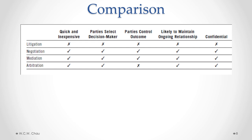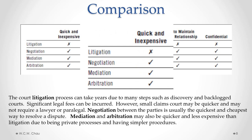Let's compare the four different methods of dispute resolution. The first criteria is quick and inexpensive. The court litigation process can take many years due to the many steps involved in a lawsuit, such as discovery. Also, the public court system is quite often backlogged — it may take quite a bit of time to get a court date for a trial. And during that long process, significant legal fees can be incurred. Because the process is fairly technical, it is highly recommended that legal counsel be retained for court litigation.